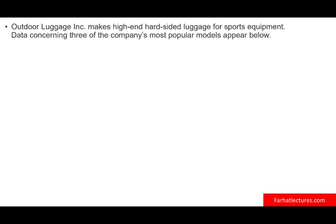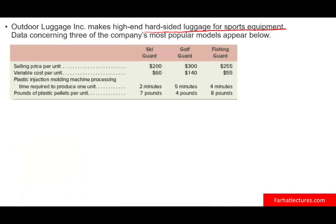The best way to illustrate this is to work an example. We have Outdoor Luggage, which makes high-end hard-sided luggage for sports equipment. We're looking at three of the company's most popular models: Ski Guard, Golf Guard, and Fishing Guard. The selling price per unit is $200, $300, and $255 respectively. The variable cost per unit is $60, $140, and $55. Once you have sales and variable cost, you can compute the contribution margin.